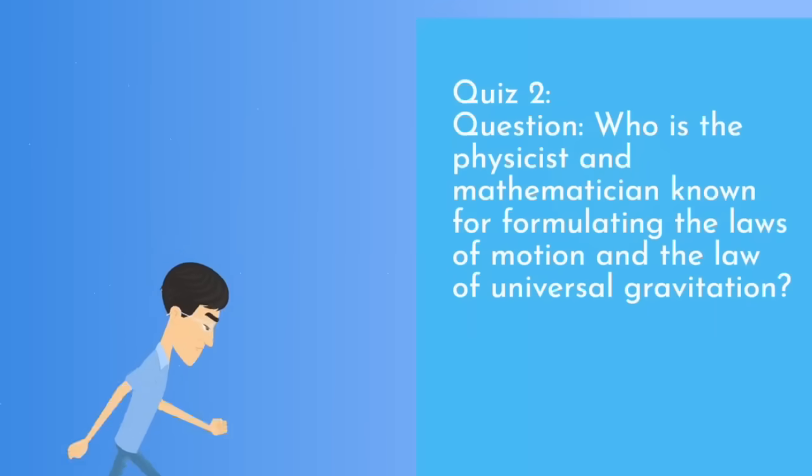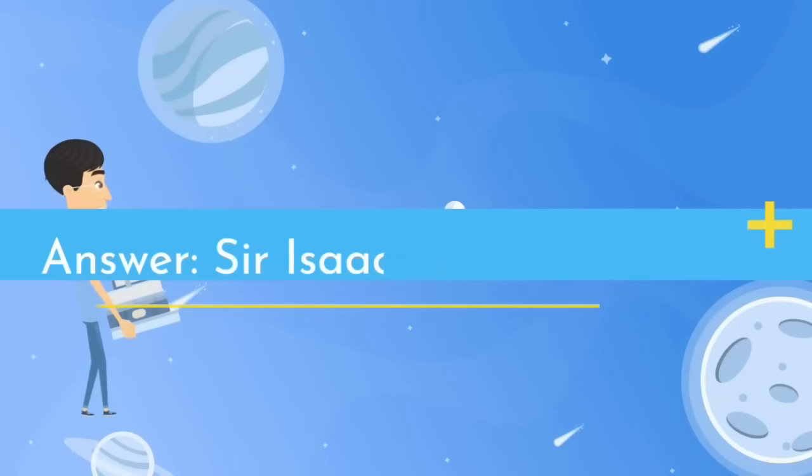Second question. Who is the physicist and mathematician known for formulating the laws of motion and the laws of universal gravitation? The answer is Sir Isaac Newton.